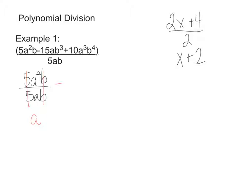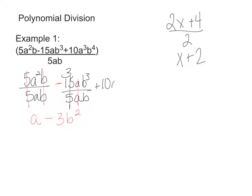The next term is 15AB cubed divided by 5AB, and that's a negative — so negative 15AB cubed divided by 5AB. 15 divided by 5 is 3, A divided by A is 1, and B cubed divided by B is B squared, so I have minus 3B squared.